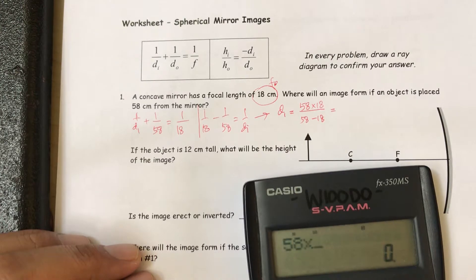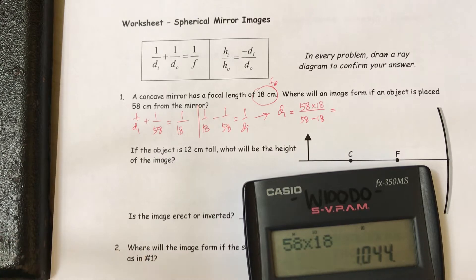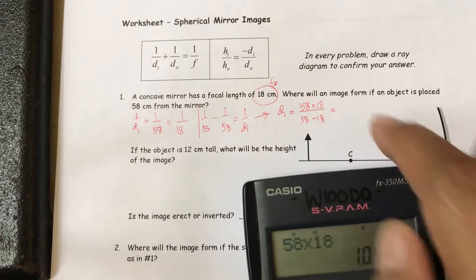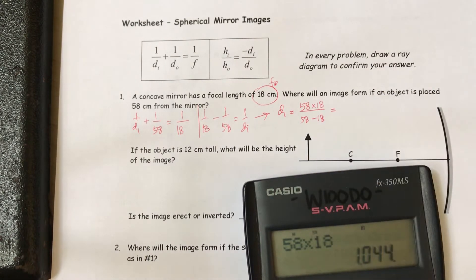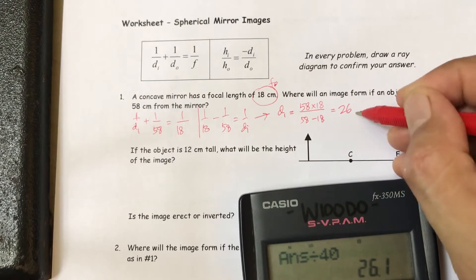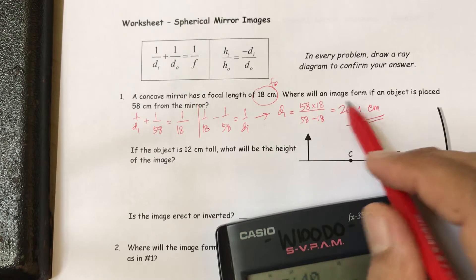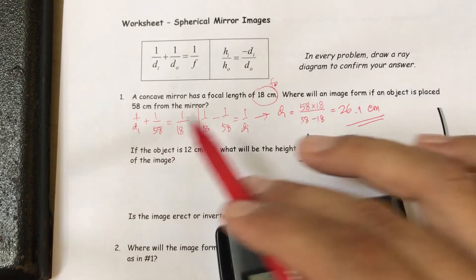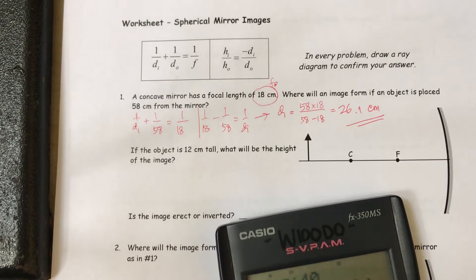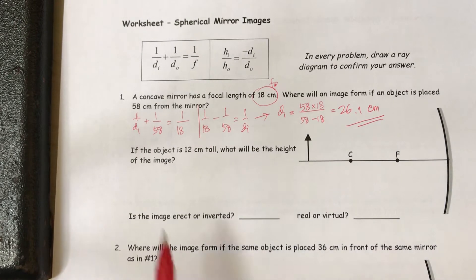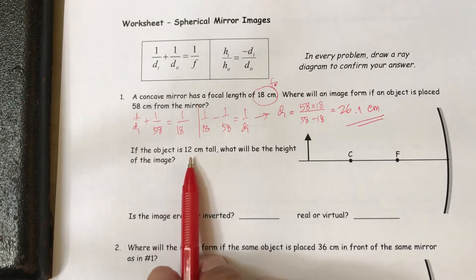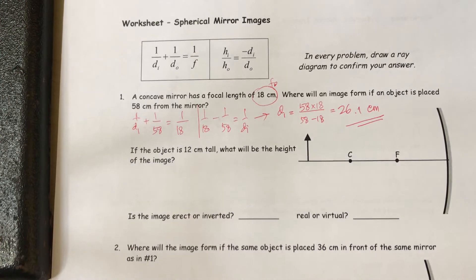So 58 times 18 equals 1044, divided by 40, giving d-i approximately 26.1 centimeters. Now if the object is 12 centimeters tall, what will be the height of the image?